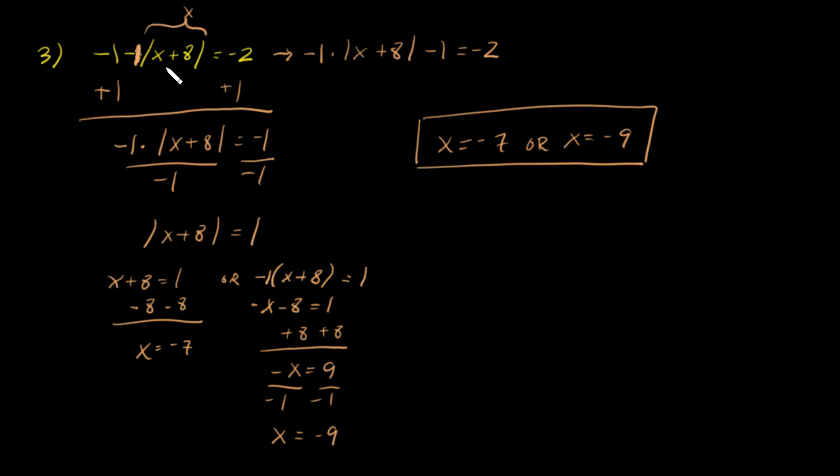Negative 9 plus 8 is negative 1. The absolute value of that is 1. 1 times negative 1 is negative 1. And then you add it to negative 1 and you get negative 2. So those answers are correct. And if you got them, good job.